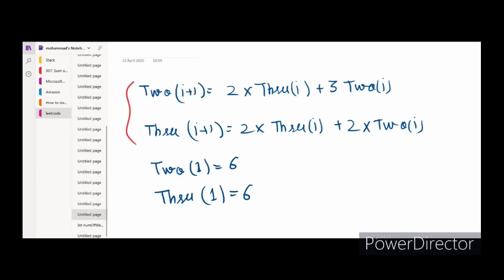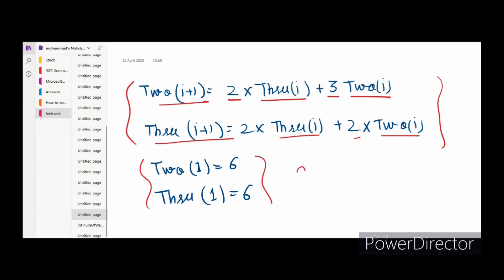With this we can form a mathematical recurrence. The number of two-color rows at row i+1 equals 3 × (two-color rows at row i) + 2 × (three-color rows at row i). The number of three-color rows at row i+1 equals 2 × (two-color rows at row i) + 2 × (three-color rows at row i). For N=1, there are 6 two-color rows and 6 three-color rows.